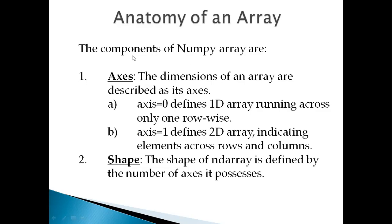The components of an array are called axes. The dimension of an array is described by its axes. Axis 0 defines a 1D array — only rows will be there with a single line of elements. Axis 1 defines a 2D array with rows and columns. Remember: if axis is 0, it is a one-dimensional array; if it becomes 1, it is a two-dimensional array.